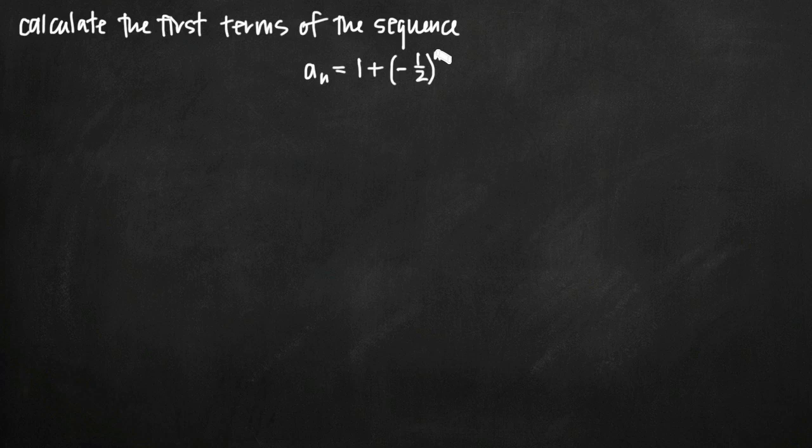When we're asked to calculate the first terms of the sequence and the nth term is this simple, all we need to do is plug in values of n starting with n equals 1 and simplifying to find the value of each term in the sequence.